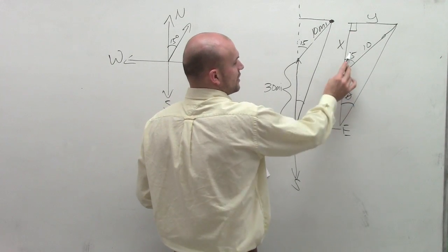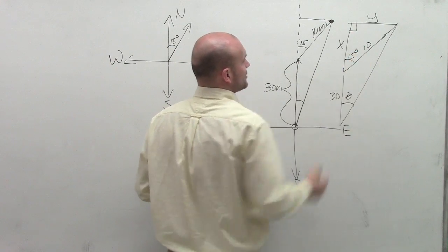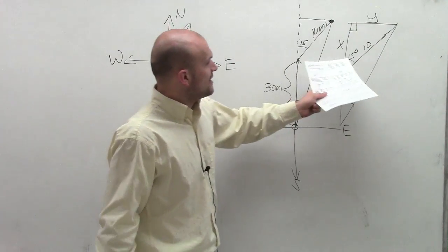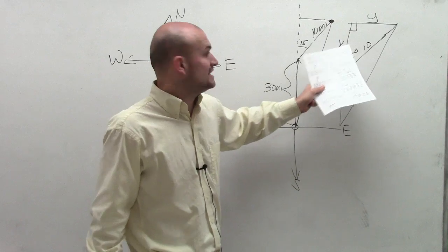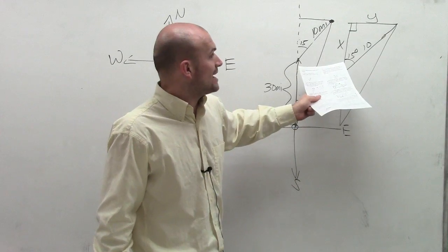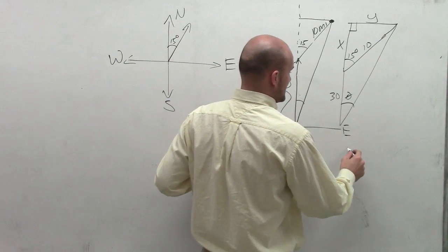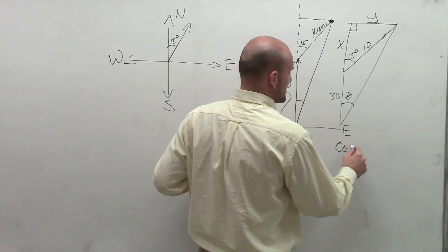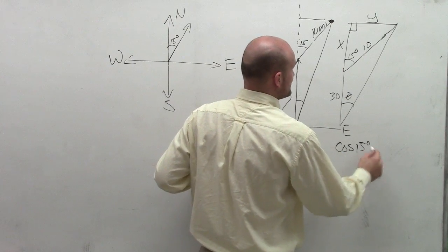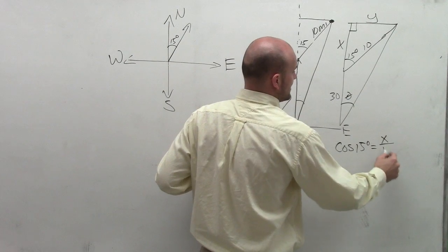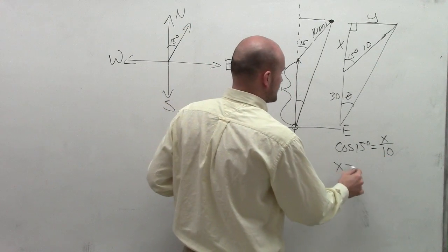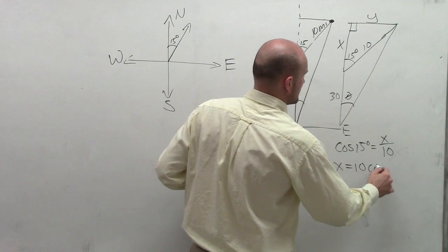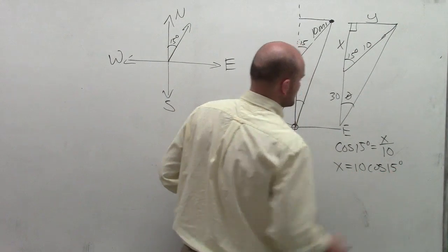So let's go and take a look at x first of all. So x, if I have this angle is at 15 degrees, so I have my angle 15 degrees, I know the hypotenuse, and I want to find x, which will be the adjacent side of my triangle. So therefore, I can say, since I'm dealing with the adjacent side, I can say cosine of 15 degrees is equal to my adjacent side over my hypotenuse. Therefore, solving for x, I can write x equals 10 times cosine of 15 degrees.